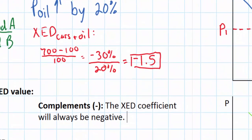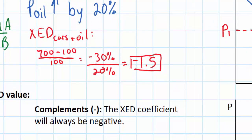What does the value of 1.5 tell you? As we learned in previous lessons, in order to interpret the absolute value of an elasticity coefficient, we know that if it is between 0 and 1, demand is inelastic; if it is greater than 1, demand is elastic. Clearly demand for cars is cross price elastic with oil — in other words, a particular change in the price of oil will lead to a larger percentage change in the demand for cars.